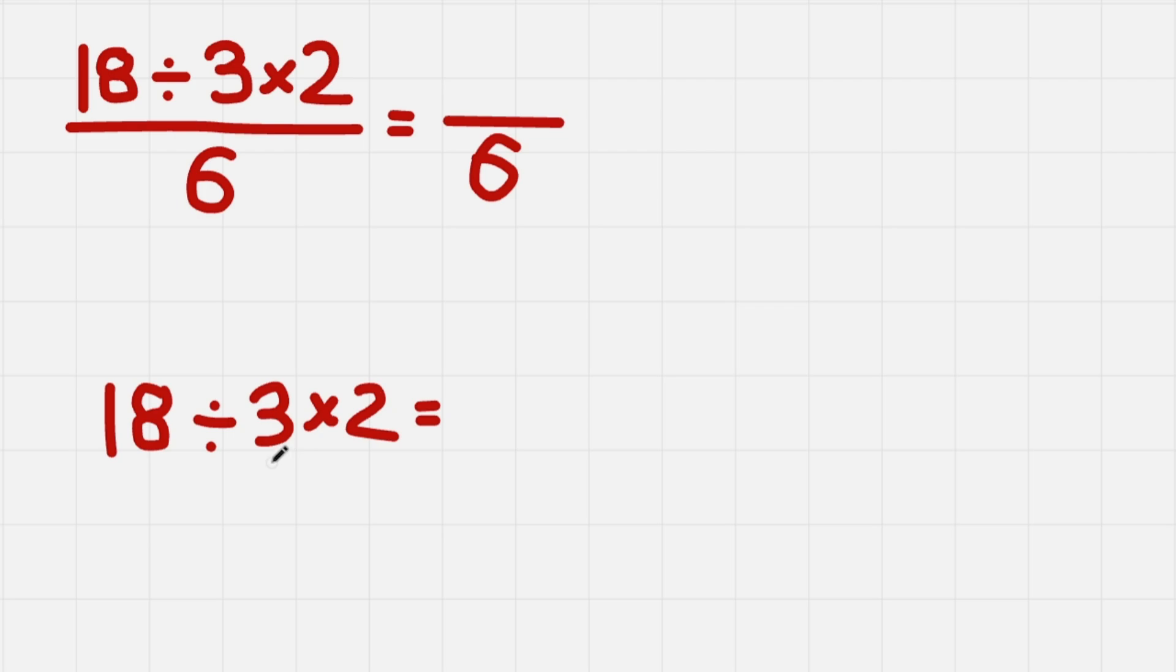And how do I usually think about it? Look, we can rewrite every division as a multiplication and every multiplication as a division. Let's rewrite this division as a multiplication. So we'll get 18 times, but now we need to change this 3 into 1 divided by 3 to a fraction and then times 2.